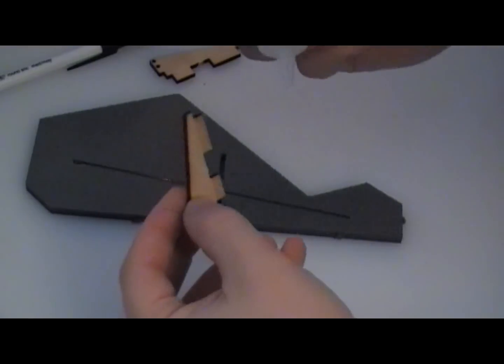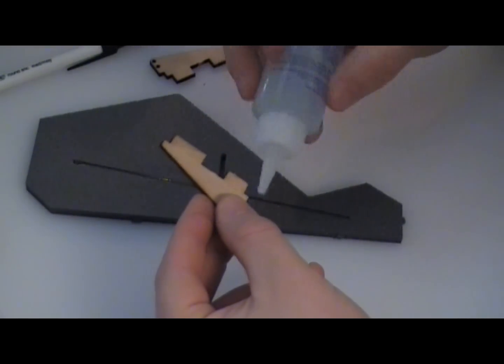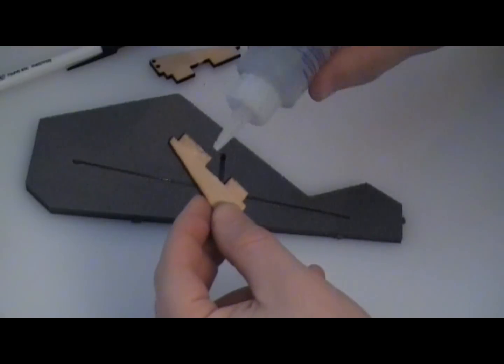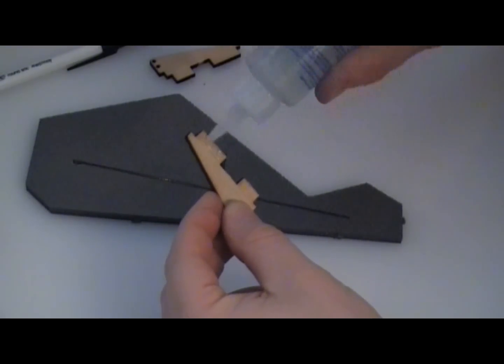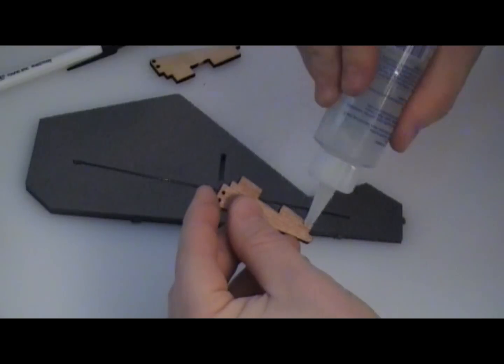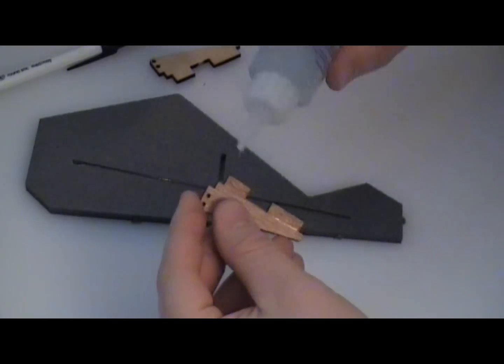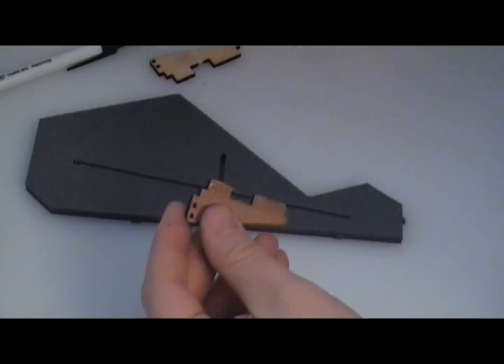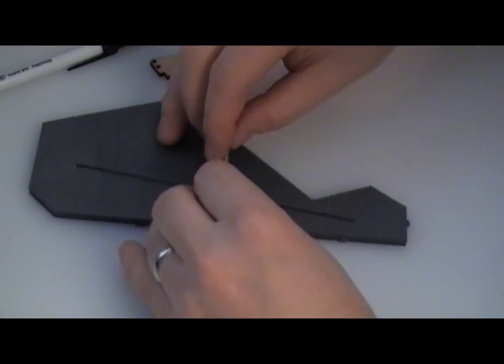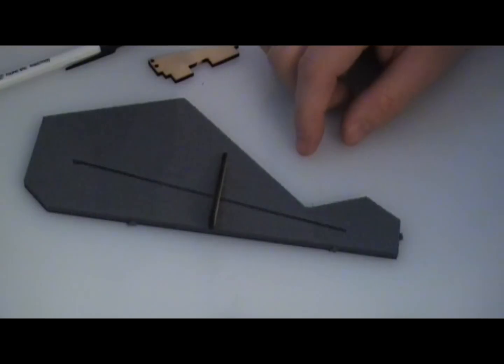The next thing that we're going to do is we're going to smooth on a very thin layer of Ultimate RC Foam Glue onto these two tabs. You'll notice that the tabs are different sizes. The small tab goes forward. We're just smoothing on a real thin layer. And now we're just going to slide the tabs into place. That's pretty much it.